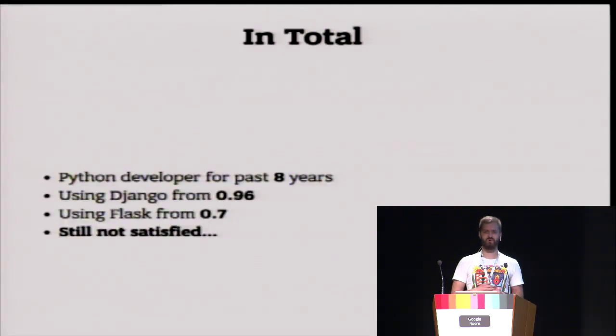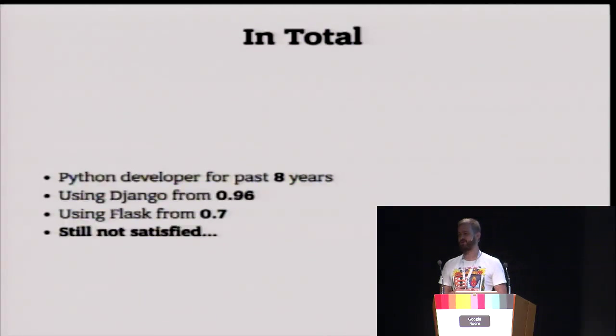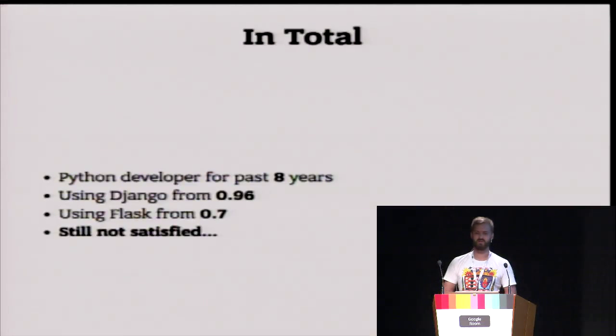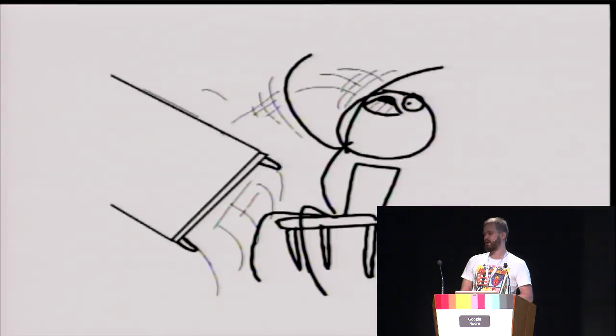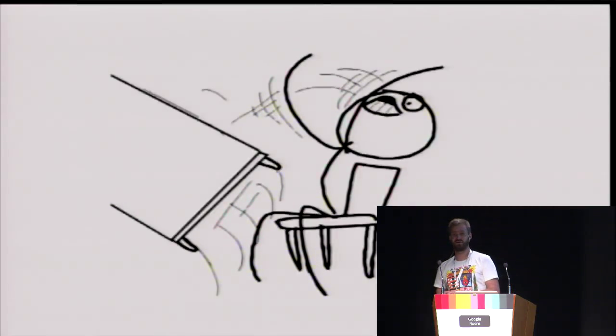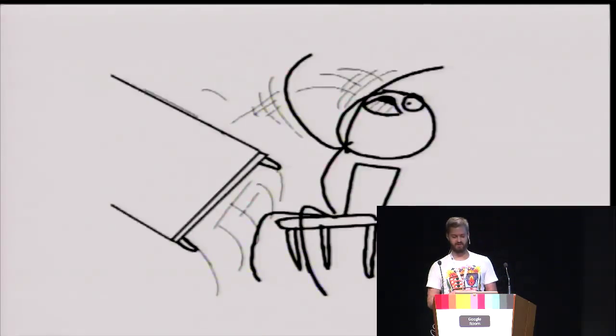From my point of view, I'm a Python developer for eight years. I'm using Django and Flask from ancient times, but I'm not happy with these technologies. This is me when I need to figure out why my Django app is working slow, or why developers on my team use dot notation for giving IDs to a foreign key. It's a mess, and I made a decision.